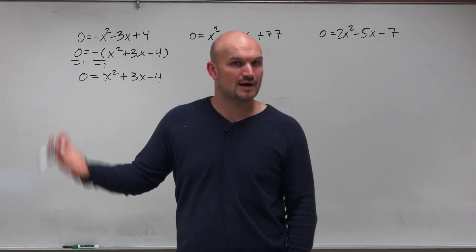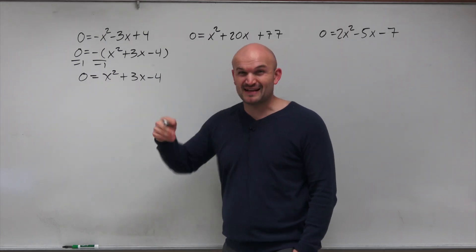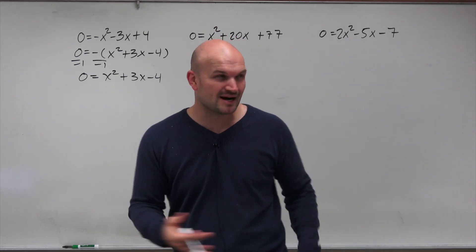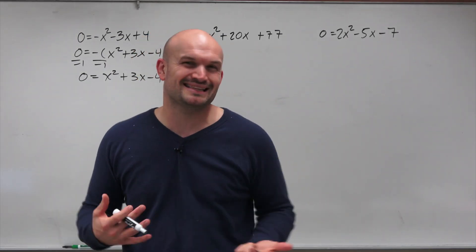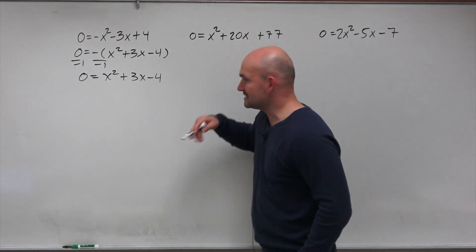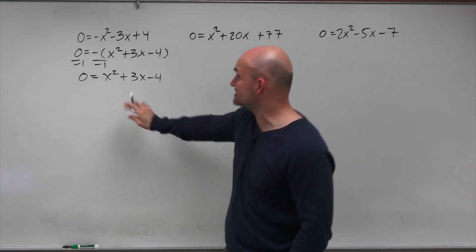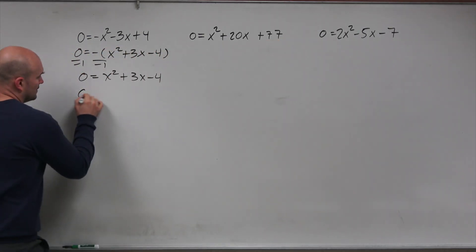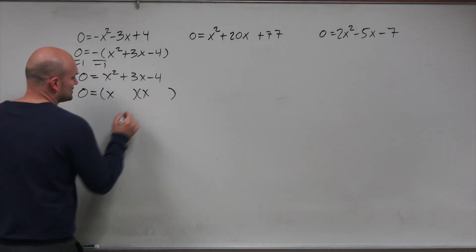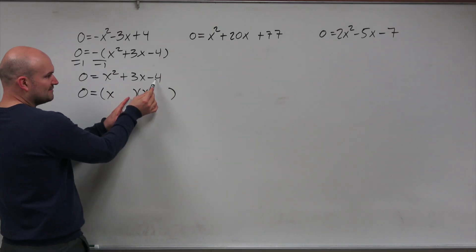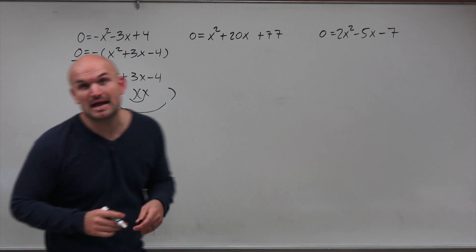So we can use the zero product property. As far as completing the square goes, if the middle term is not an even number, we're not going to want to use it. And the quadratic formula, of course, involves a long formula of plugging things in. So I ask: is this going to be factorable? What two numbers multiply to give me negative 4, and also add to give me 3? Because a quadratic trinomial can be broken down into a product of two binomials. I'm looking for two numbers that multiply to negative 4 and whose inner and outer products add to give me positive 3x.